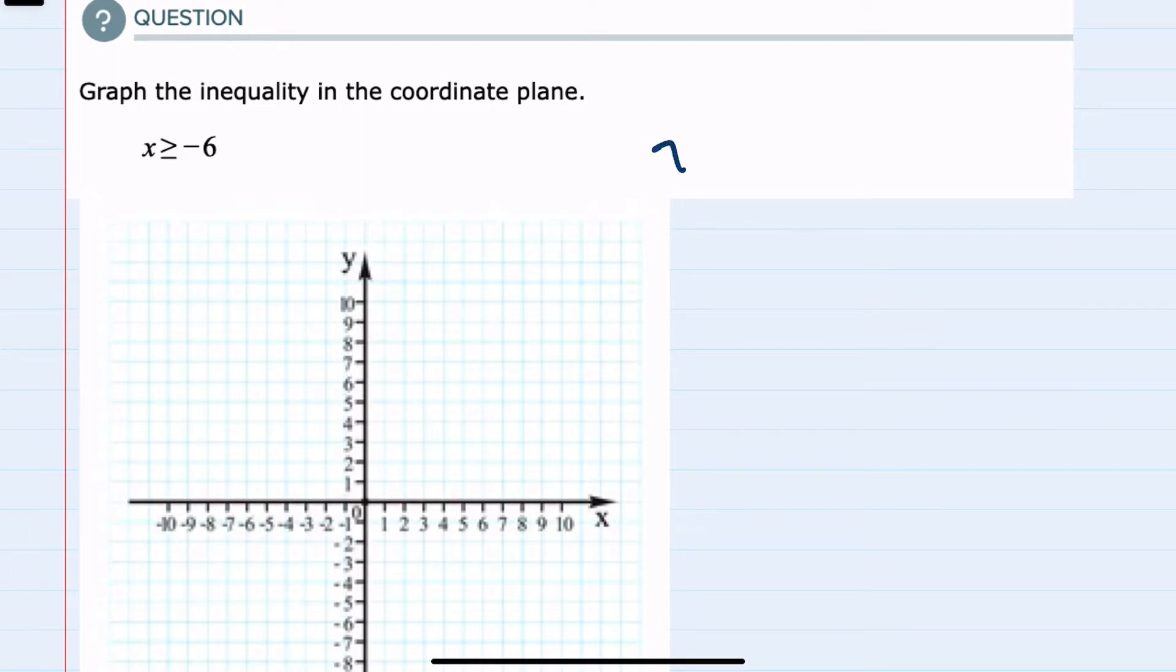So to start, I'll just graph x equals negative 6. We'll go along the x-axis to negative 6, and we know that for this line, x is always negative 6, so this will be a vertical line through x equals negative 6.